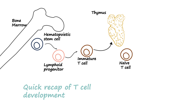The thymus leads to the production of mature T cells. They learn all the techniques to recognize peptides from MHC, but they still haven't encountered antigens, which means they are still naive. They have the training but haven't handled real-life scenarios — these are naive T cells.